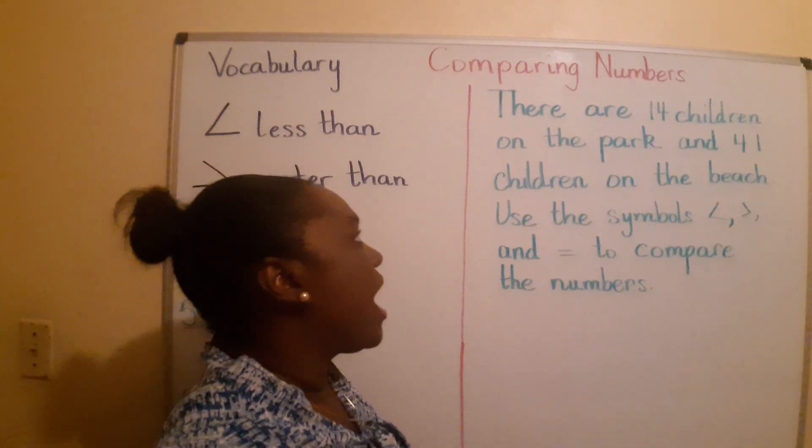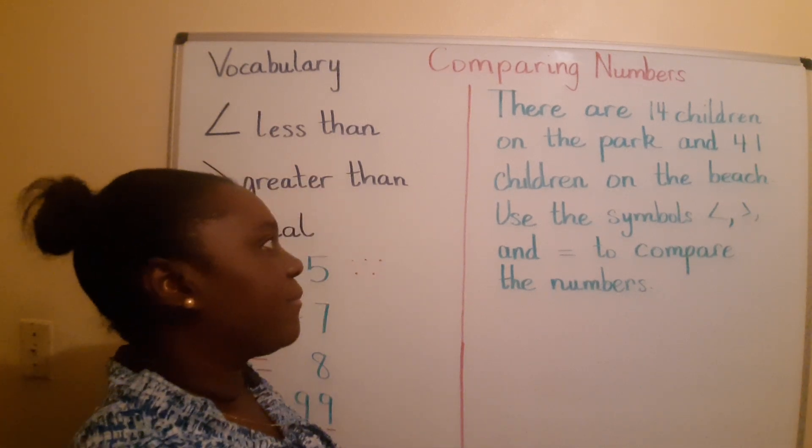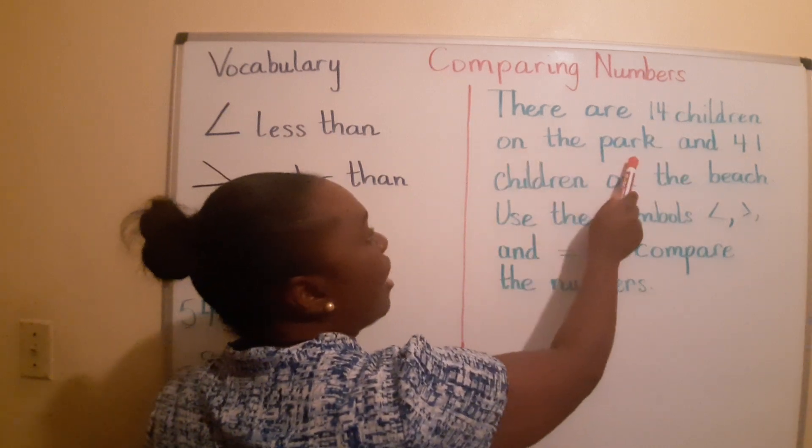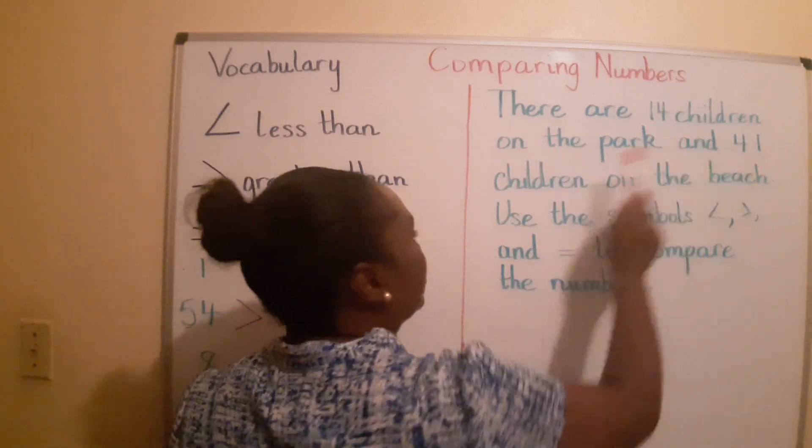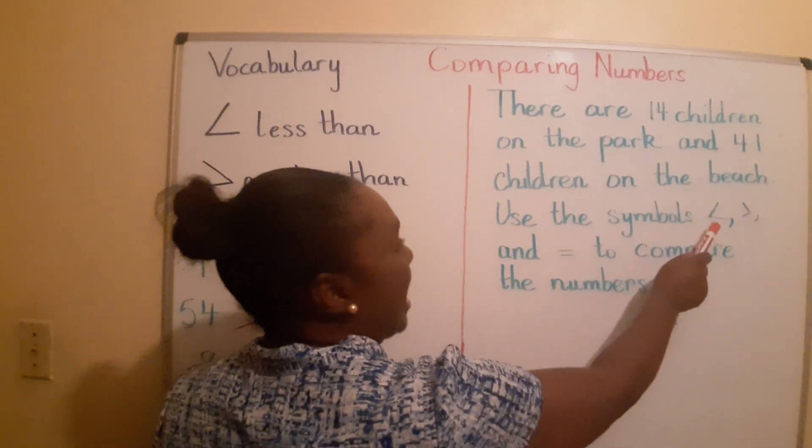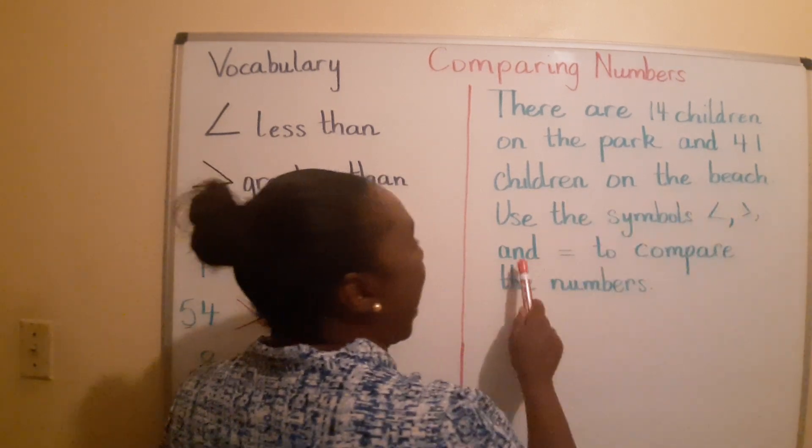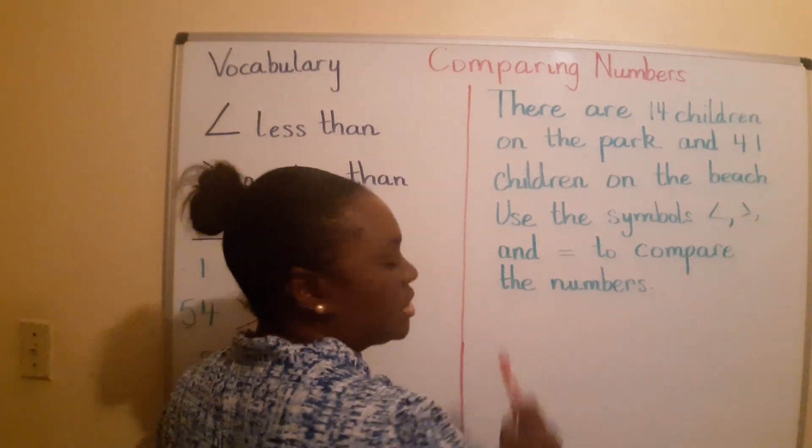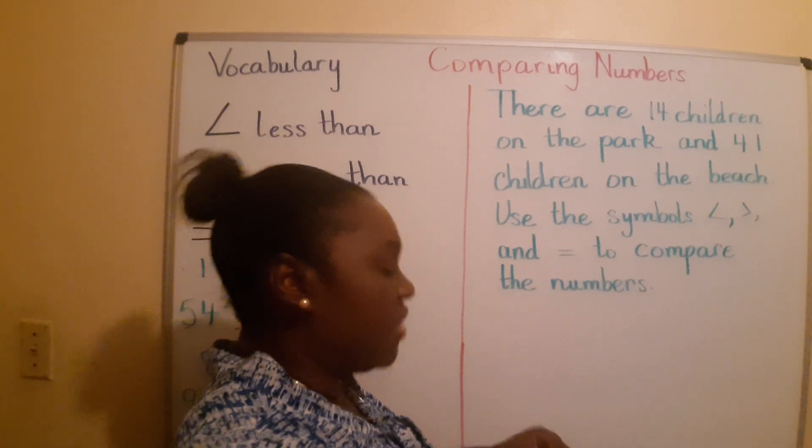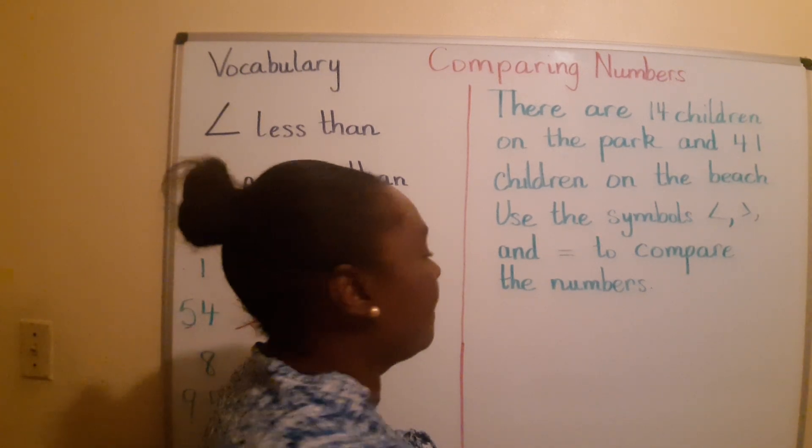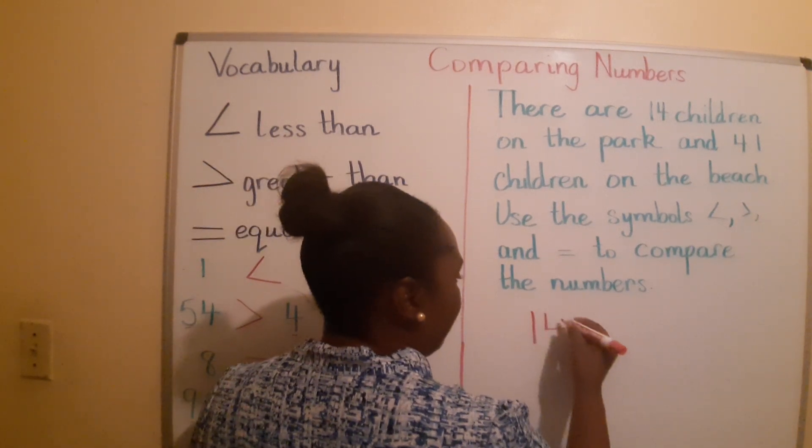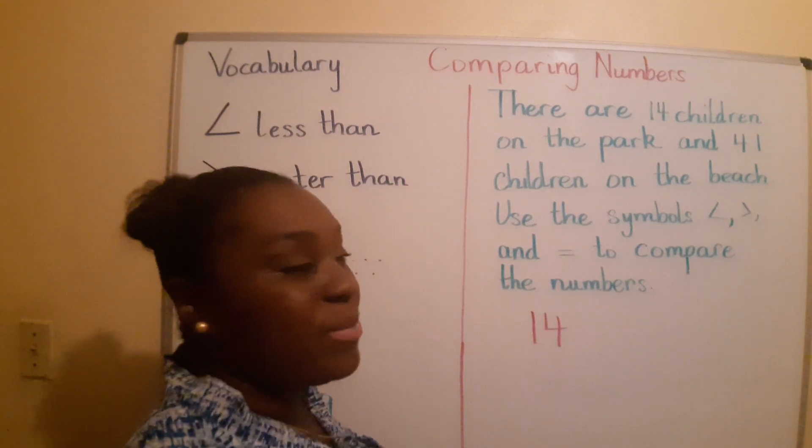Let's read our word problem. There are 14 children on the park and 41 children on the beach. Use the symbols less than, greater than, and equal to compare the numbers. So, first, let's write down these numbers. How many children are on the park?